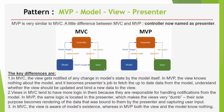Second, the Views in MVC tend to have more logic in them because they are responsible for handling notifications from the Model. In MVP, the same logic is located in the Presenter, which makes the View very dumb. Their sole purpose becomes rendering of the data that is bound to them by the Presenter and capturing user input. And finally, in MVC the View is aware of the Model's existence, whereas in MVP both the View and the Model know nothing about each other.